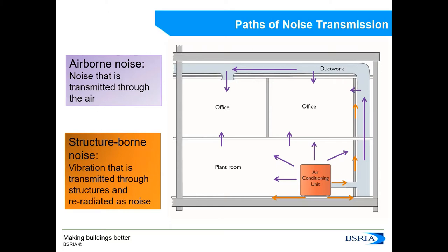There are two types of noise. Noise produced by a product transmitted through the air is called airborne noise, and sources include fans, compressors, pumps and motors. Vibration transmitted through structures and radiated as noise by connected components is called structure-borne noise. Sources of structure-borne noise include casing and ductwork and are typically harder to identify and control. A diagram on this slide shows purple arrows indicating airborne noise paths and orange arrows indicating structure-borne noise paths.